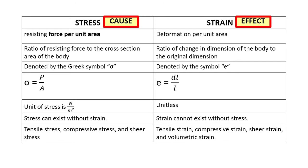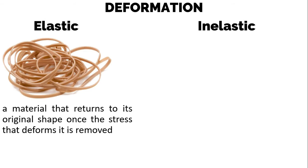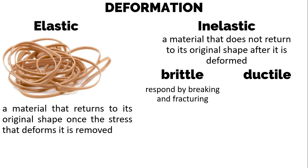Now let's go to deformation. Deformation has two kinds: elastic and inelastic. To understand this, consider a rubber band — it returns to its original shape once the stress is removed. That is elastic behavior. Inelastic is when a material does not return to its original shape after it is deformed. There are two kinds of inelastic materials: brittle and ductile.